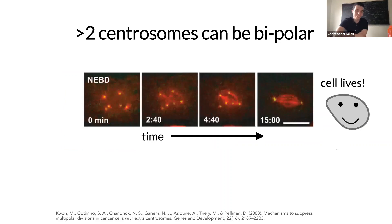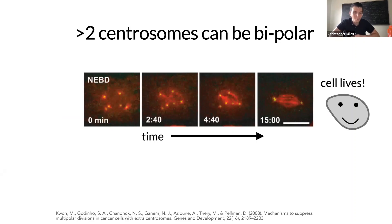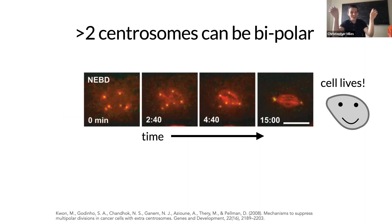But cancer cells are also very tricky. In this sequence of images, time goes left to right. On the leftmost image a cancer cell starts cell division with six yellow centrosomes — a lot more than two. But looking at the progression of time, it actually clusters these centrosomes. If I just showed you the image on the far right, you'd say that's a perfectly good mitotic spindle — the classic bipolar structure.